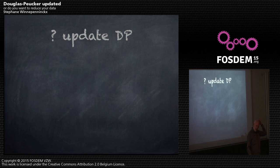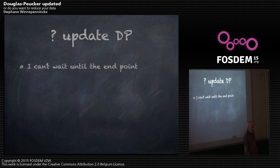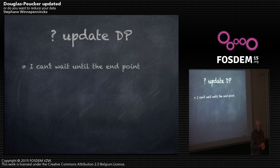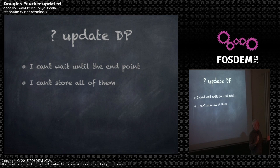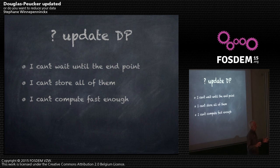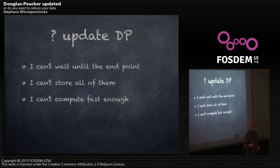Why do I need to update the Douglas-Peucker algorithm? I can't wait until the end point, and there are several reasons. One is that I can't store all the points — going from here to the south of France with a small device, you probably won't have enough memory. Also, maybe I cannot compute it fast enough when I arrive, or my navigation system shuts down before computation finishes and power is cut.